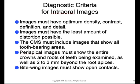The diagnostic criteria for intraoral images include images that have optimum density, contrast, definition, and detail. This is controlled by setting the correct kVp and mA settings and exposure time. Images must also have the least amount of distortion as possible — this means taking the correct bisecting angles, making sure film isn't bent in the mouth, and using correct angulation. The CMS must include images showing all tooth-bearing areas, periapical images must show entire crowns and roots plus two to three millimeters beyond the root apices, and bitewing images must show open contacts.